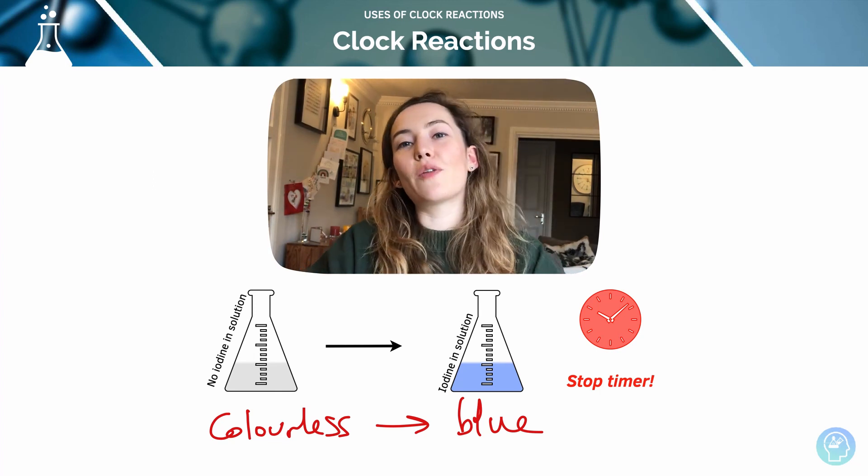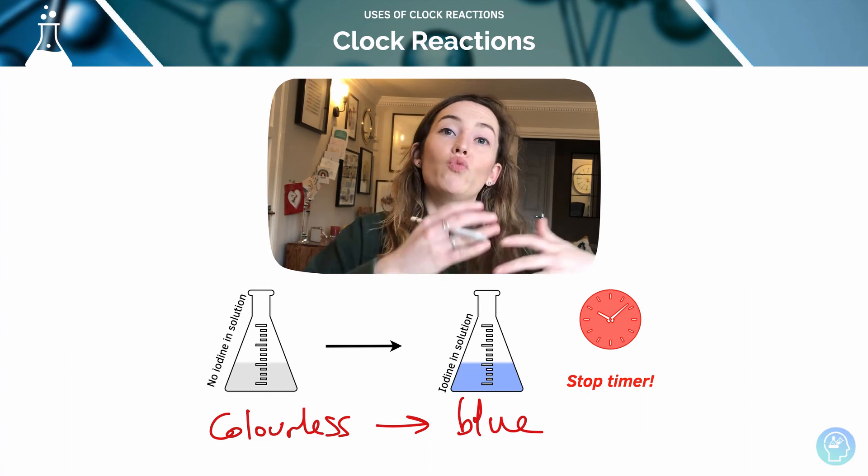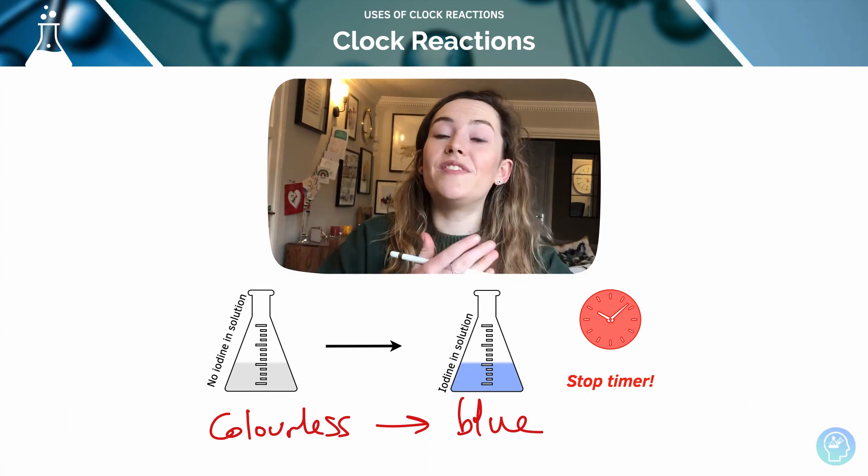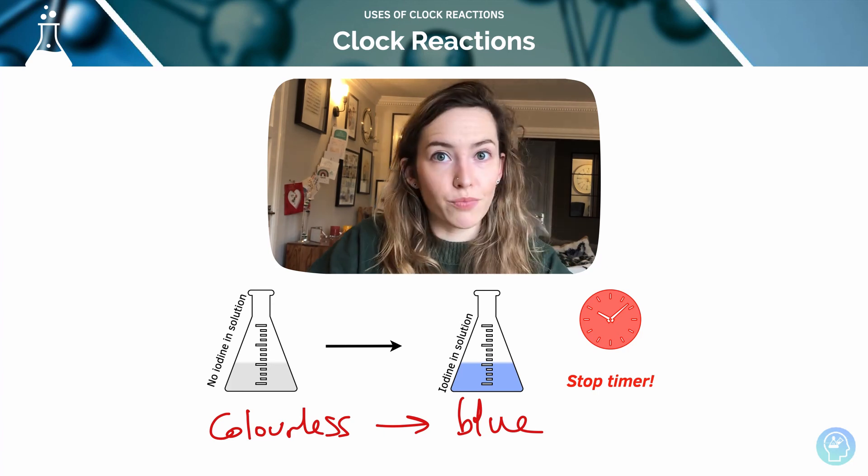And of course the final step, and then you're going to stop the timer when you see that happen. The final step is to repeat all of the above, but with different concentrations of the potassium iodide or hydrogen peroxide.